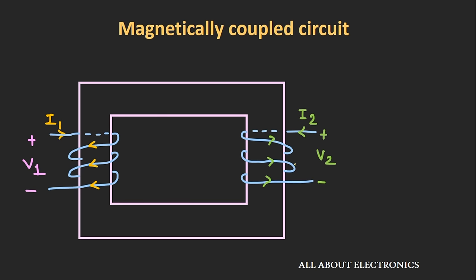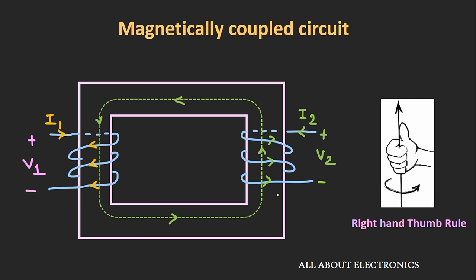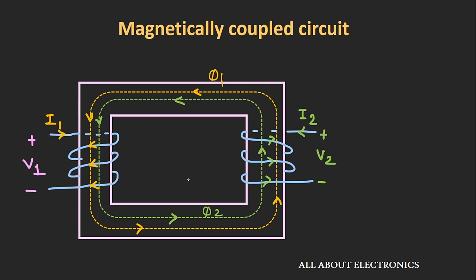If we apply voltage to the second coil, the current flows in that direction. Using the right-hand thumb rule, the flux in coil number 2 will flow in the upward direction. Now if currents I1 and I2 are flowing simultaneously, the flux produced by coils 1 and 2 flows in those directions. As you can see, these two fluxes are adding to each other, so the voltage generated by the mutual coupling between the two coils will be positive.